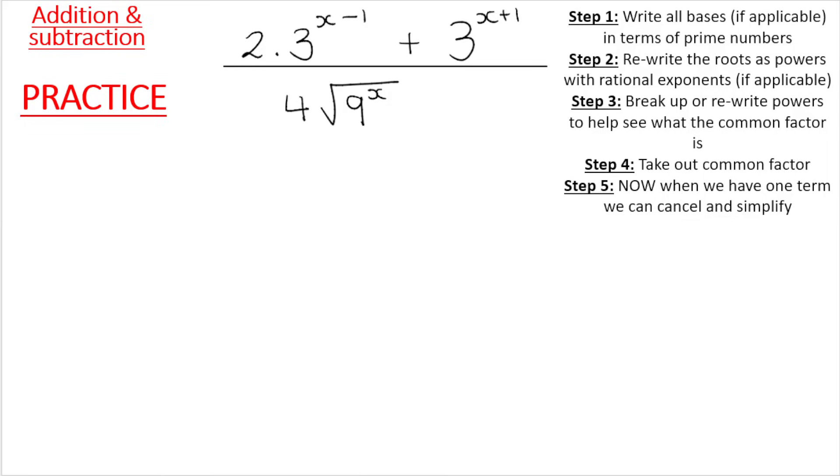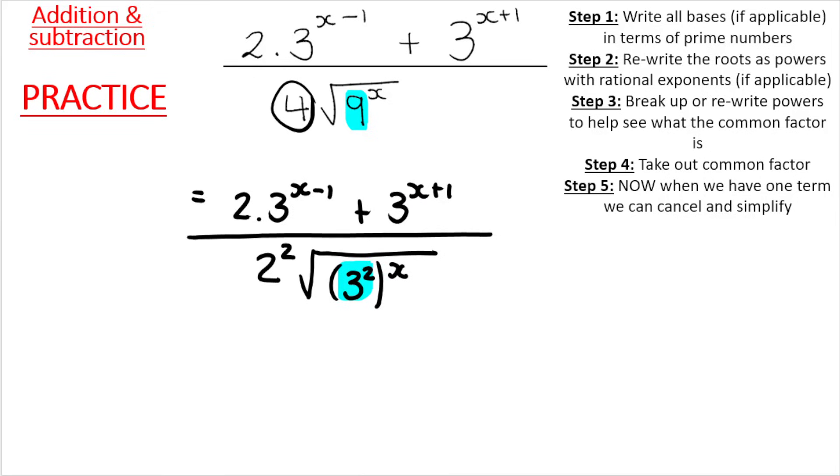Let's try another one. Right, in this one, step 1: Write all bases, if applicable, in terms of prime numbers. So we can see that the top of the fraction's all good. It's already in prime numbers. The 4 can be rewritten as 2 to the power of 2. It may not be necessary, but let's do it anyway. And then under the root, the 9 to the power of x can be rewritten as 3 to the power of 2, and that is raised to the power of x. Now, just for the sake of simplifying, so I don't have to write an extra step, 9 is raised to the exponent of x. So 3 to the power of 2 in brackets needs to be raised to the exponent of x. But I know I'm going to eventually do power inside multiplied by exponent outside. So essentially, it's 3 to the power of 2x. I hope that makes sense. Now, that's step 1 done.